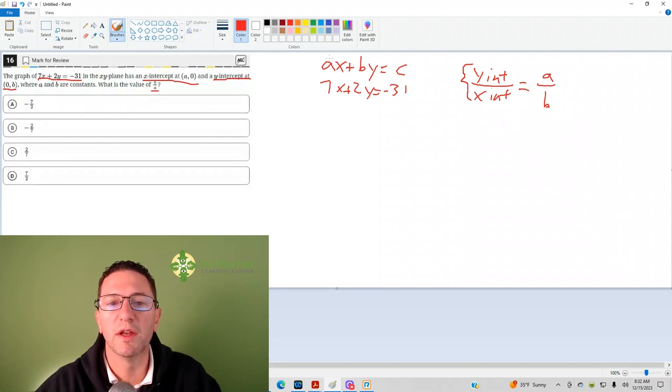When you're in this form, standard form ax plus by equals c, it's a over b. So you can see that the a corresponds with the 7, the b corresponds with the 2, so it's 7 over 2.